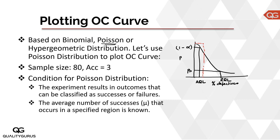We said we are using the Poisson distribution for this. The first condition for the Poisson distribution is that the experiment results in an outcome that can be classified as success or failure — whenever we pick an item, the result should be acceptable or rejectable, good or bad, pass or fail. The second condition is that the average number of successes occurring in a specific region is known.